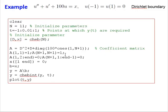Let's take an example solving the second-order differential equation: U'' + U' + 100U = X, with Dirichlet boundary conditions U(-1) = U(1) = 0. We take 11 nodes — we can increase the number as we wish — and find the solution on the interval from minus 1 to 1 with a step of 0.01.